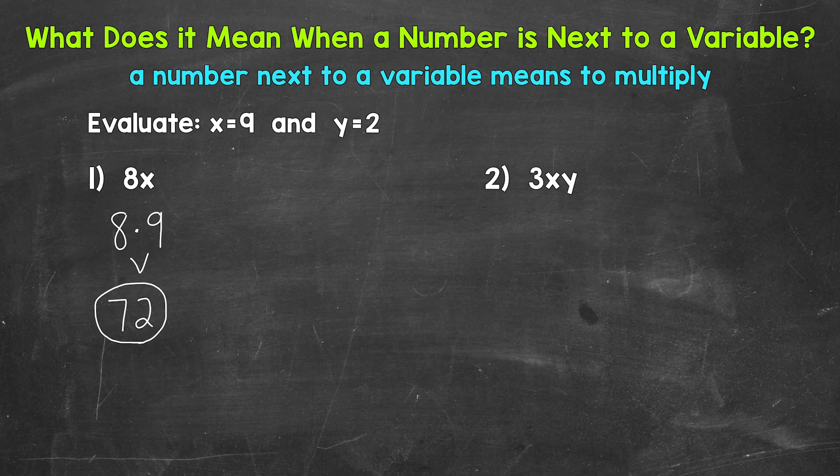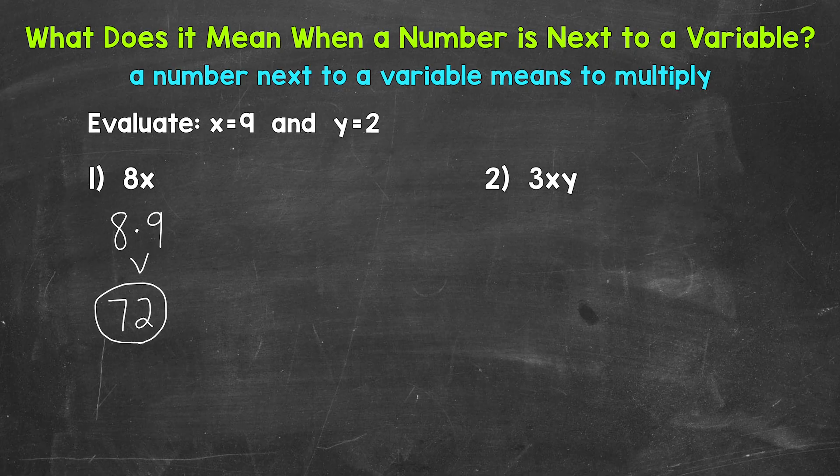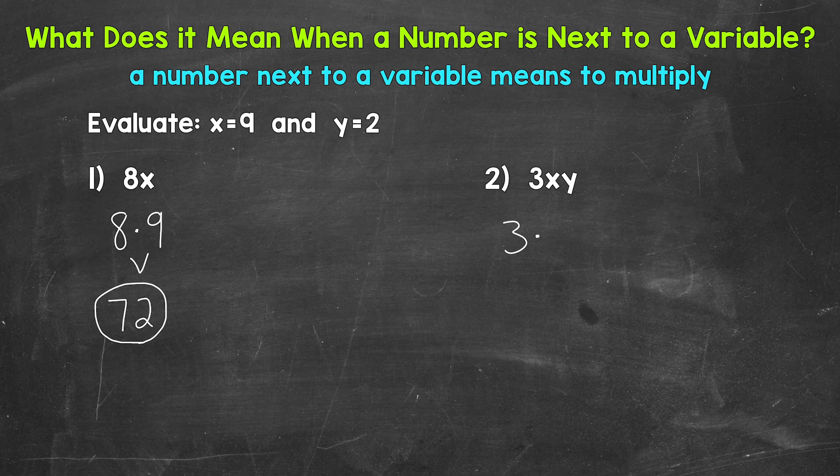Let's move on to number 2, where we have 3xy. So we have a number next to 2 variables. This still means multiplication. We have 3 times x times y. Let's evaluate this expression. So let's plug in and go from there. We have 3 times x. x equals 9. So plug in 9 for x times y. y equals 2. So plug in 2 for y.